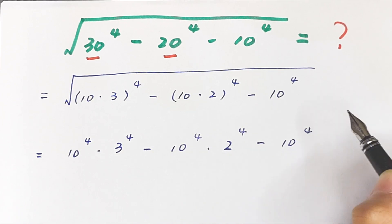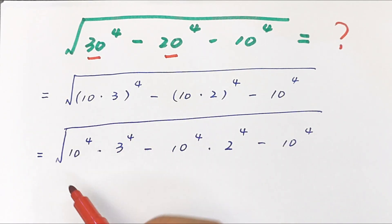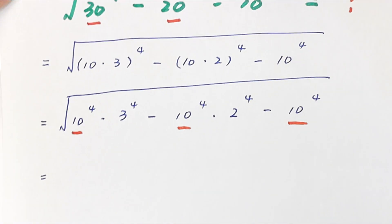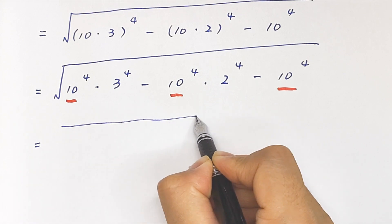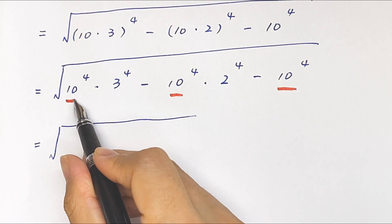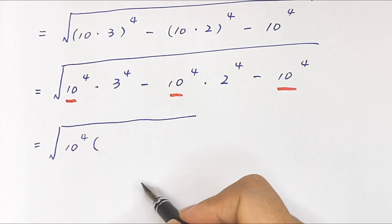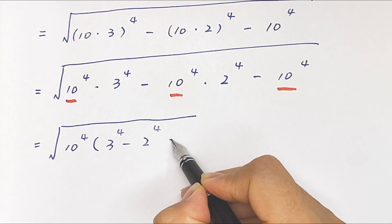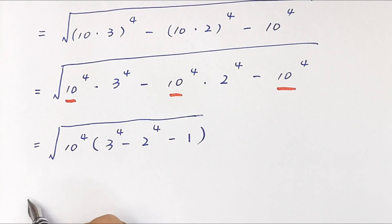Minus 10 to the power of 4. Now 10 to the power of 4 is common, so it will be equal to the square root of — we take this out of the bracket — 10 to the power of 4 times bracket 3 to the power of 4 minus 2 to the power of 4 minus 1.